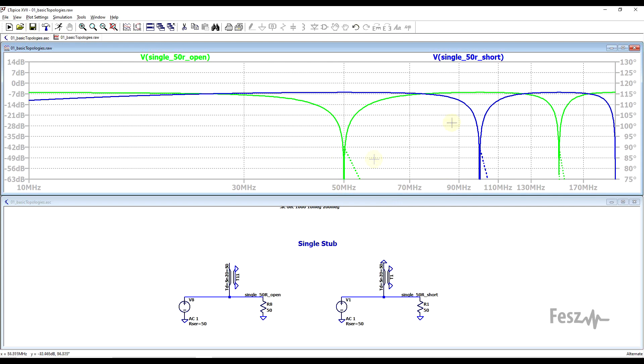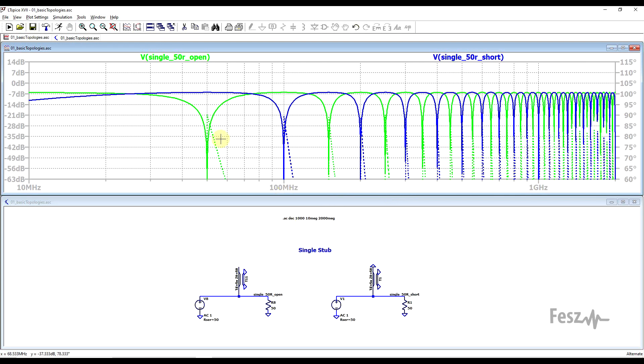And at double this, so at the half wavelength point, 100 megahertz, the behavior is inverted. Now if we resimulate the circuit over a wider frequency range, we can see that other than the fundamental resonances, we also get higher harmonics.